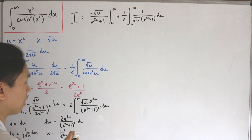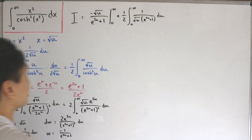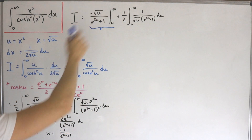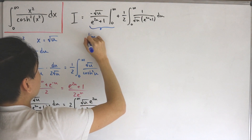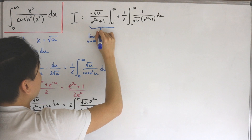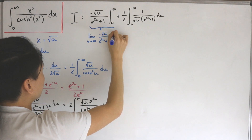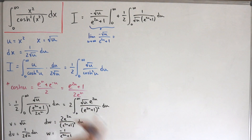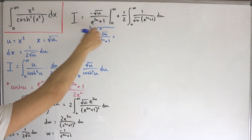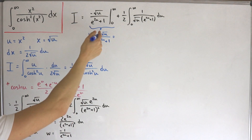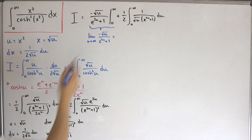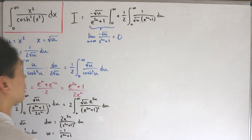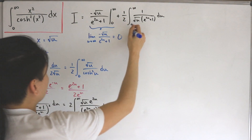For the boundary term, plugging in zero gives zero. At infinity we have an indeterminate infinity-over-infinity form, so we apply L'Hôpital's rule. The numerator derivative is negative 1 divided by (2 times the square root of u), which approaches zero, while the denominator grows to infinity, so the whole boundary term vanishes. We're left with just the remaining integral.